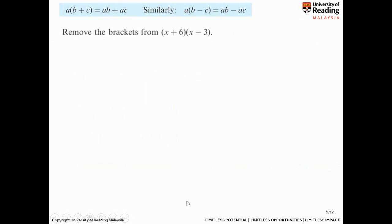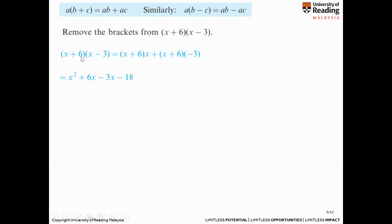Now we have two brackets. You expand by doing four multiplications: x times x gives x squared; x times minus 3 gives minus 3x; 6 times x gives 6x; then 6 times minus 3 gives minus 18. Simplify the two middle terms: 6x minus 3x gives 3x. So your final answer is x squared plus 3x minus 18.